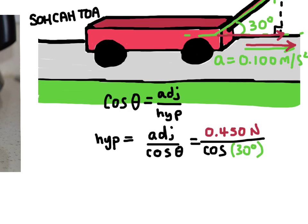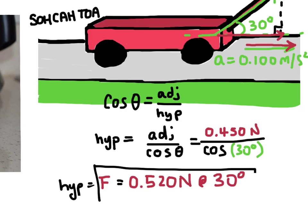And so the hypotenuse of this triangle, which is going to be equal to the force, is equal to, I'm just going to change hypotenuse symbol to F, because I'm actually solving for force. It's going to be 0.520 newtons, and I'm just going to include there at, that's just an at symbol, 30 degrees. So I'm saying 30 degrees above the horizontal. And so that's the force that the boy is actually applying on the wagon.